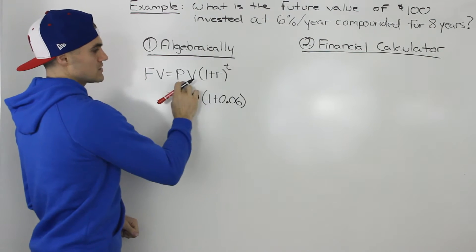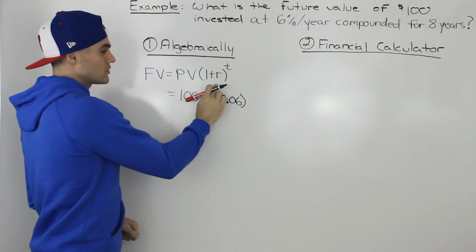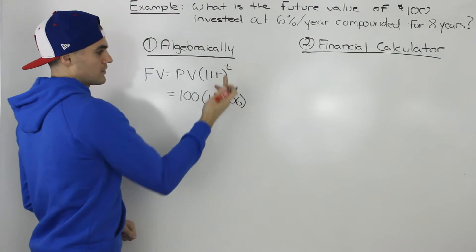First off, this is compound interest, so we know that we're using the compound interest formula, so the one with an exponent.